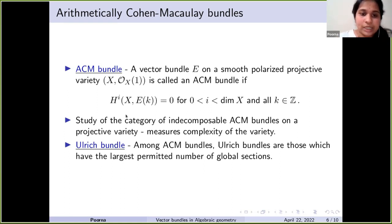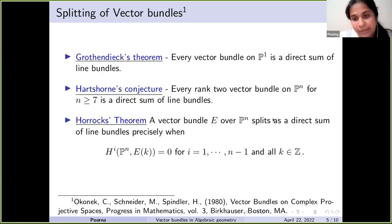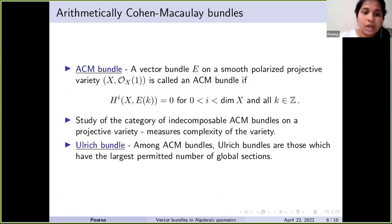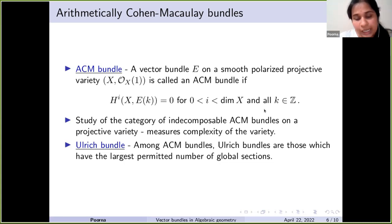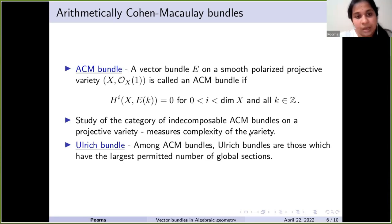Note that over projective space, any higher-rank ACM bundle splits as a direct sum of line bundles, so the only indecomposable ACM bundle over projective space is the line bundle itself. If we study the family of ACM bundles over a projective variety and it has only finitely many, it is closer to projective space; if it has a large family of indecomposable ACM bundles, it is farther from being a projective space. So ACM bundles measure the complexity of the variety in some sense.